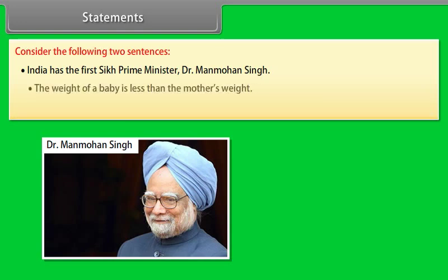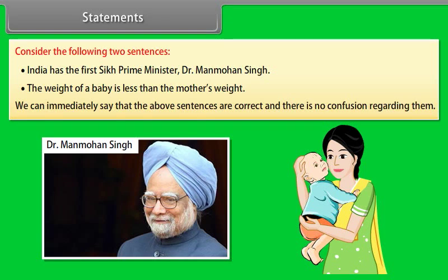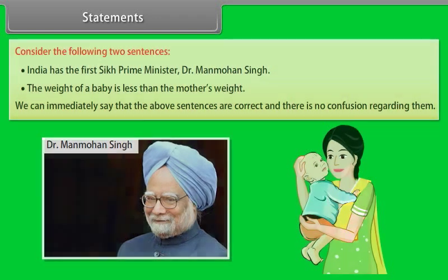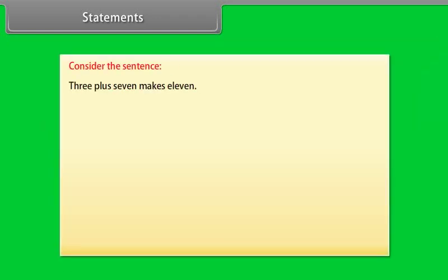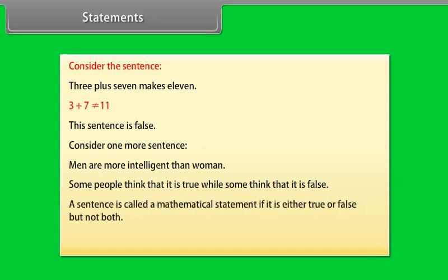The weight of a baby is less than the mother's weight — we can immediately say this sentence is correct with no confusion. Consider the sentence '3 plus 7 makes 11' — this is false. Consider 'Men are more intelligent than women' — some think it is true, some think it is false. A sentence is called a mathematical statement if it is either true or false, but not both.